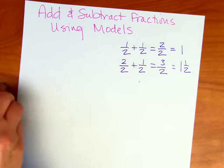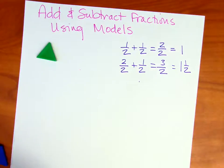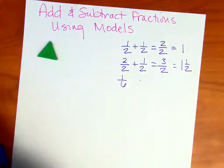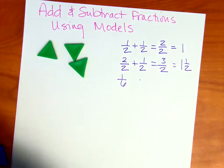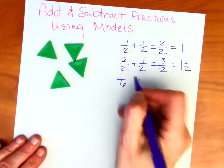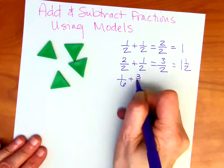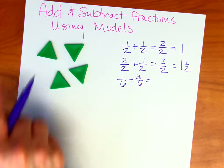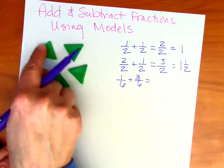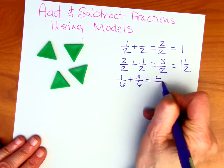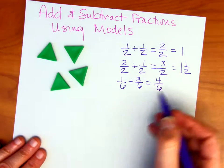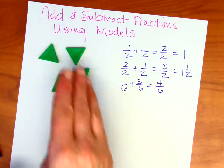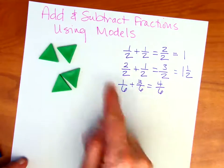Let's go ahead and work with some triangles. Say I have one-sixth and I'm going to add to that three-sixths. So one-sixth plus three-sixths. How many do I have? I have four — one, two, three, four — four-sixths. And I could reduce that, but let's just focus on what's going on here and then we can reduce later.